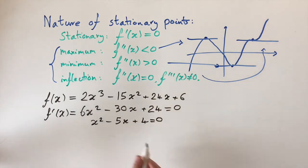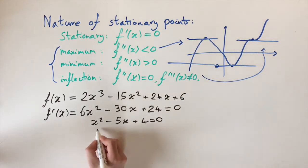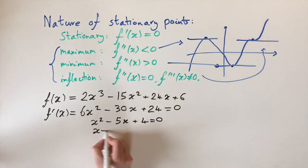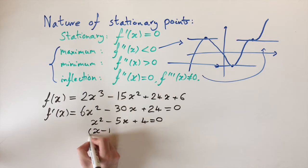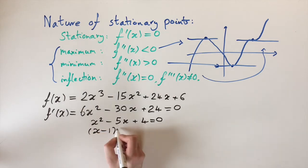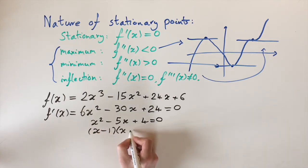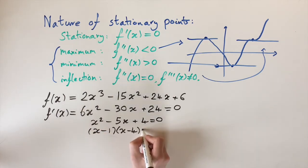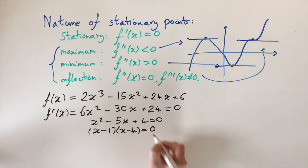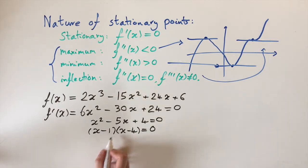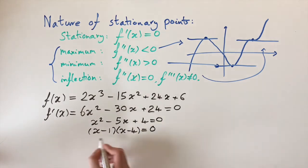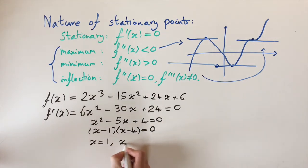This is something we can factorize. It factorizes as (x − 1)(x − 4). You can check that by expanding these brackets out. This tells us the stationary points — it tells us when the derivative is zero — which is when x = 1 and x = 4.